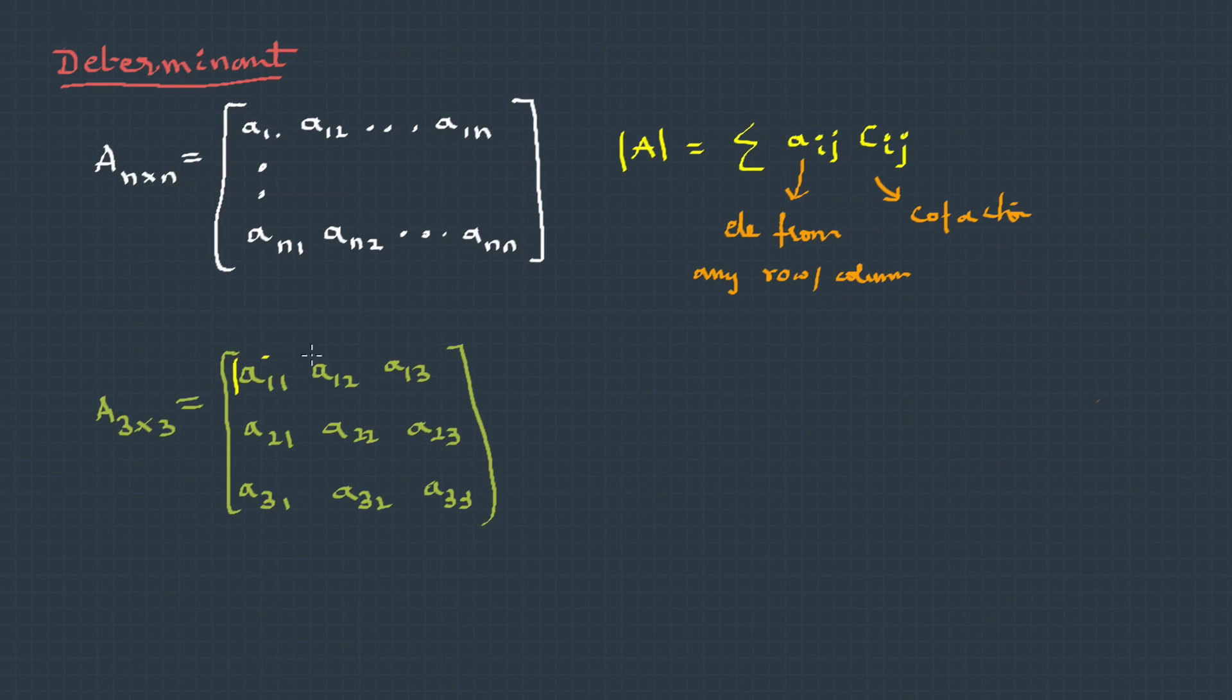So the determinant of A will be: for each element we multiply it with its cofactor and then we take the summation. So we can write this as a11 multiplied with its cofactor C11 plus a12·C12